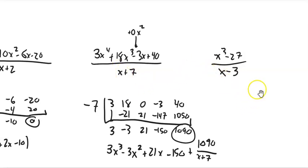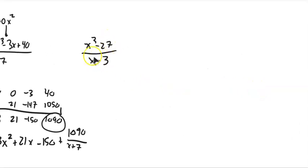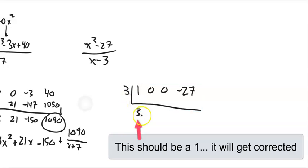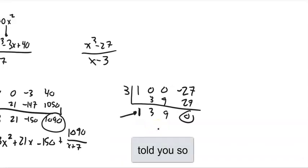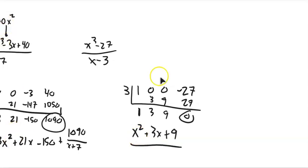And on this last one then, x cubed minus 27 divided by x minus 3. So let's see. What makes this a 0? 3. And then I've got 1x cubed. I've got 0x squareds. I've got 0x's. And then I've got minus 27. So I need those placeholders for the x squared and the x. So bring it down. Multiply. Add. Multiply. Add. Multiply. Add. Remainder of 0. That means this goes into that exactly. So that would make this an x squared, x cubed divided by x is x squared, plus 3x plus 9.